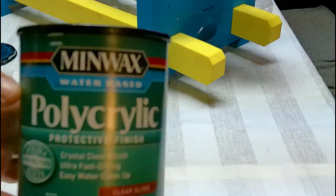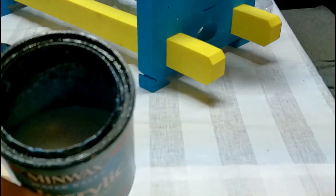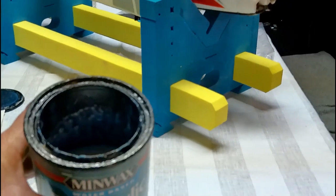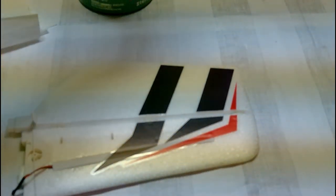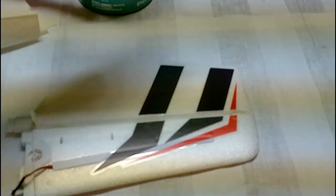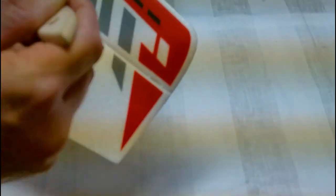Alright, so Minwax makes this polycrylic. And it's a milky looking substance, but it dries clear. And we've got one of the elevator halves right here. And you just gently brush this on. And when you're doing it, it's easier to see that you have your coat evenly. You just want to get it even and put a light little coat over it. And that's all. And it goes a long ways. And it dries rather quick.